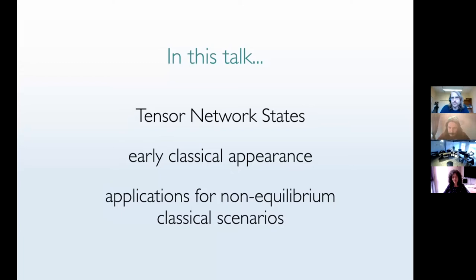I want to give you a bit of an overview of what these tensor networks are and why they are really useful for classical systems — this is not something new, it's probably older than any of our quantum algorithms — but also what are these newer applications we have been working on for non-equilibrium classical systems. This work is mainly driven by collaboration with Juan Garrahan and his student Luc Causer in Nottingham, and also with Sofiane Iblisdir in Barcelona and David Perez Garcia in Madrid.